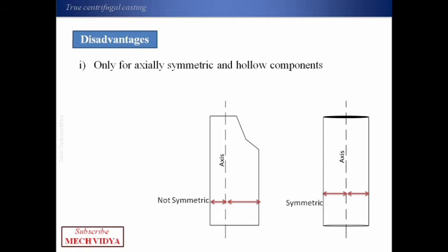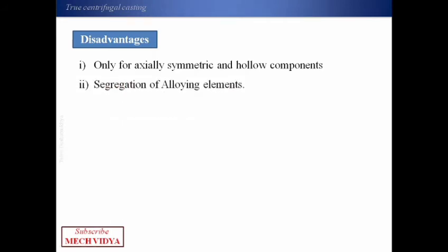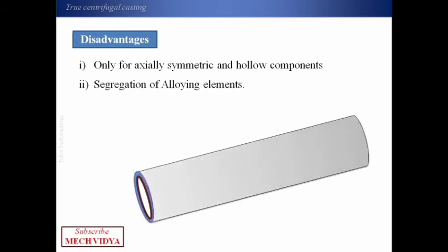So the next drawback is the separation of alloying elements. Now what does this mean? Suppose instead of one metal we want to do casting of an alloy of two metals. Then due to the action of centrifugal force, the heavier metal will get settled near the walls of the mold, and the less dense metal will settle over the heavier metal near the inner diameter, just like this. That is, two metals will segregate. And finally, one more drawback is the costly setup cost of the system.